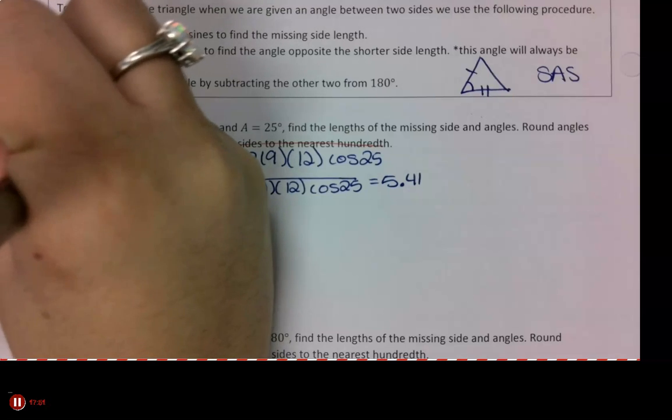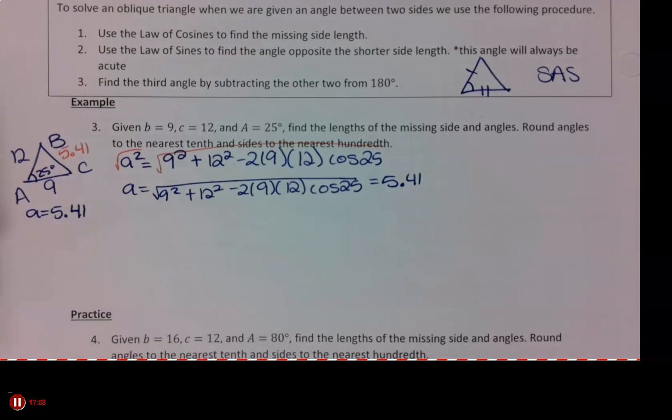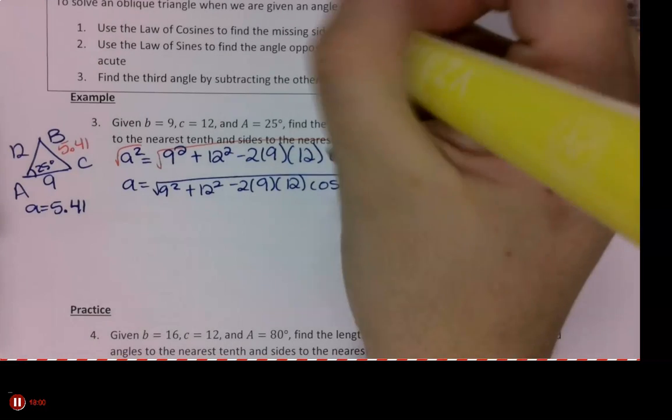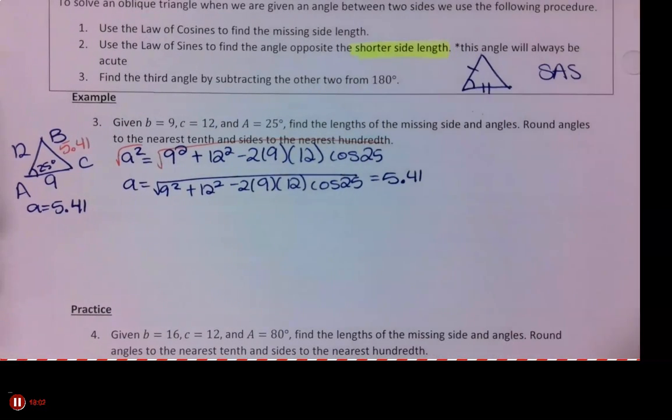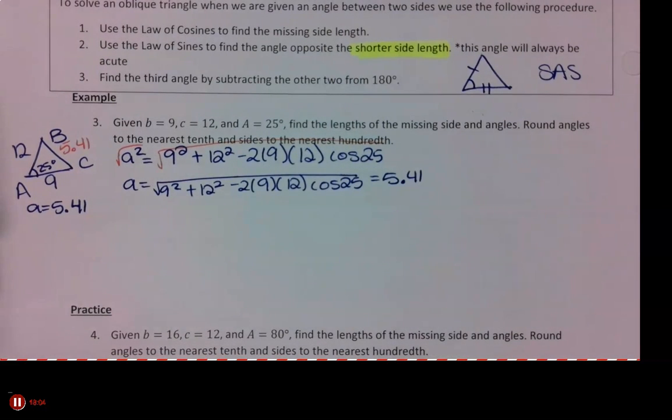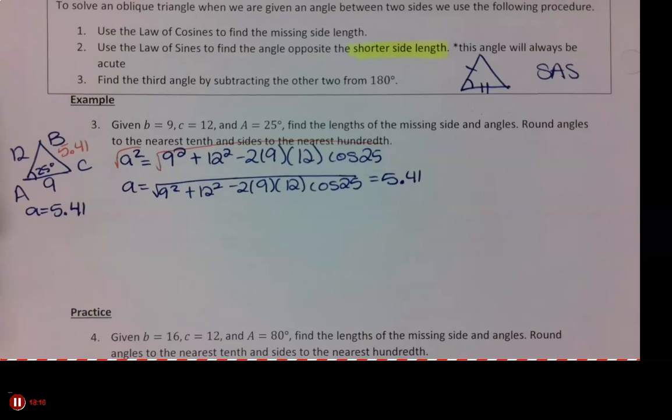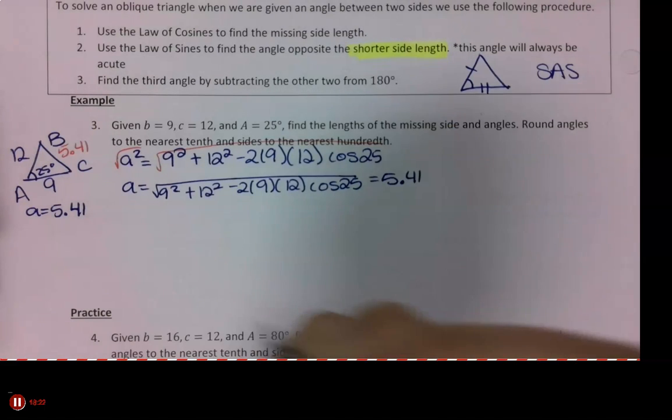Okay, so when I'm solving a side angle side triangle, when I go to find my second angle, I always have to find my shorter side length. Because if I don't, it might give me a triangle that doesn't make sense. So like, the angles won't add up correctly. What is my shorter side? B.